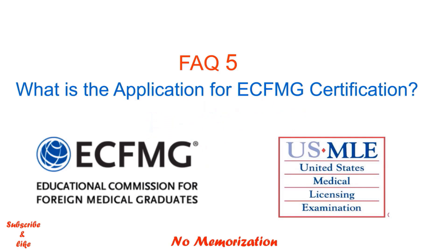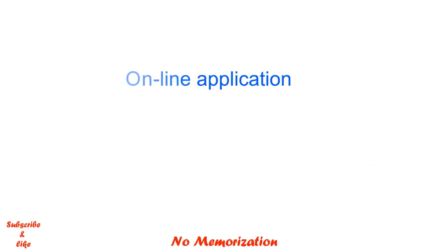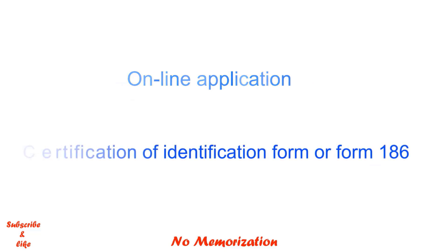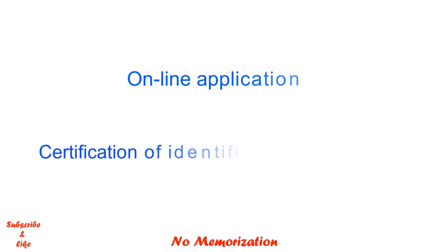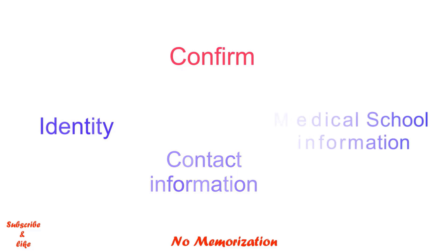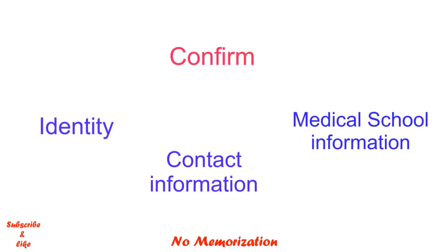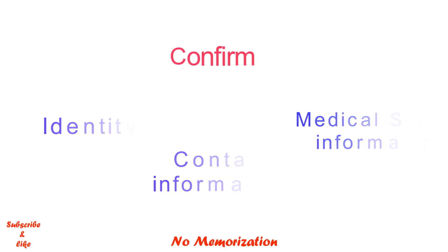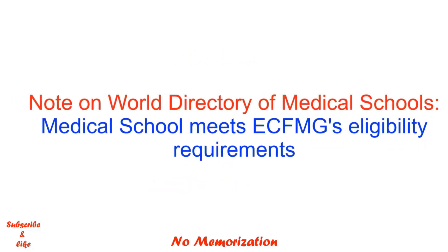What is the application for ECFMG certification? The application consists of an online application and the Certification of Identification form, commonly known as Form 186. It requires applicants to confirm their identity, contact information, and graduation from or enrollment in a medical school that is listed in the World Directory of Medical Schools. There should also be a note stating the medical school meets ECFMG's eligibility requirements.